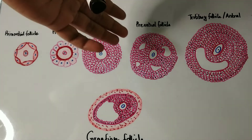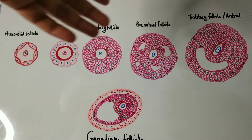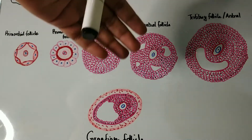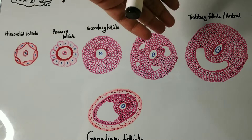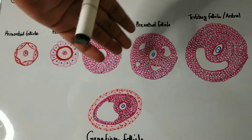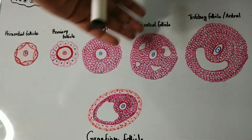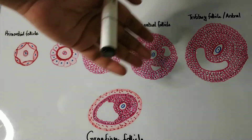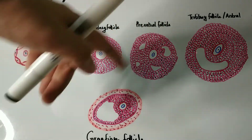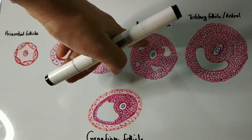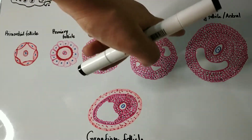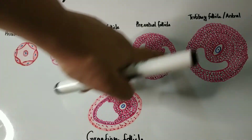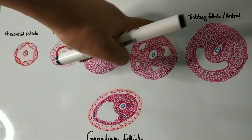As more and more granulosa cells are formed, these granulosa cells secrete a fluid resulting in fluid-filled spaces in between granulosa cells. This is called the preantral follicle, which is characterized by these fluid-filled spaces between granulosa cells.